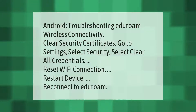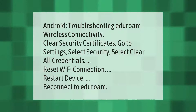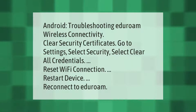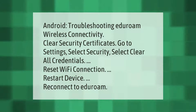Android troubleshooting: eduroam wireless connectivity. Clear security certificates — go to Settings, select Security, select Clear All Credentials. Reset the Wi-Fi connection, restart the device, then reconnect to eduroam.